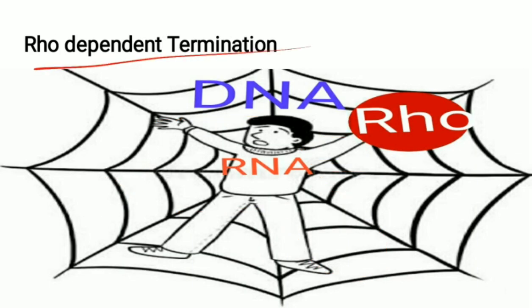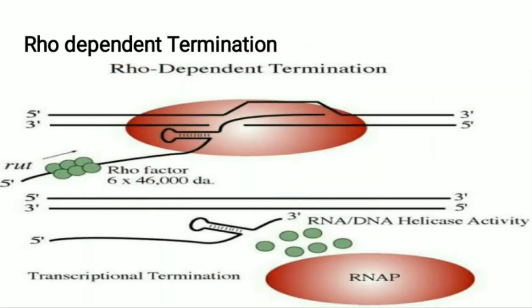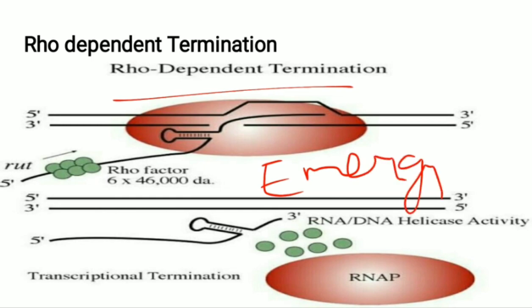In rho-dependent termination, the RNA is stuck in the DNA and cannot come out on its own — the rho protein acts as a savior. As soon as rho binds to the DNA, the RNA polymerase is unable to move further, and the synthesizing RNA is released outside. This type of termination requires energy and occurs only in rare cases.